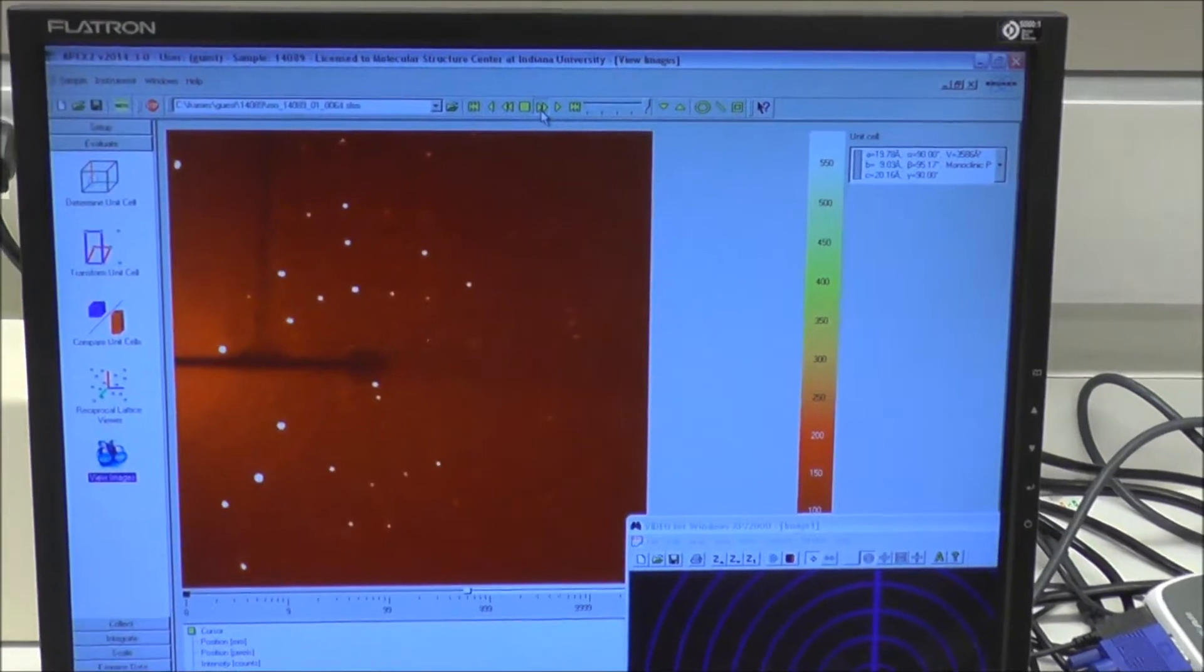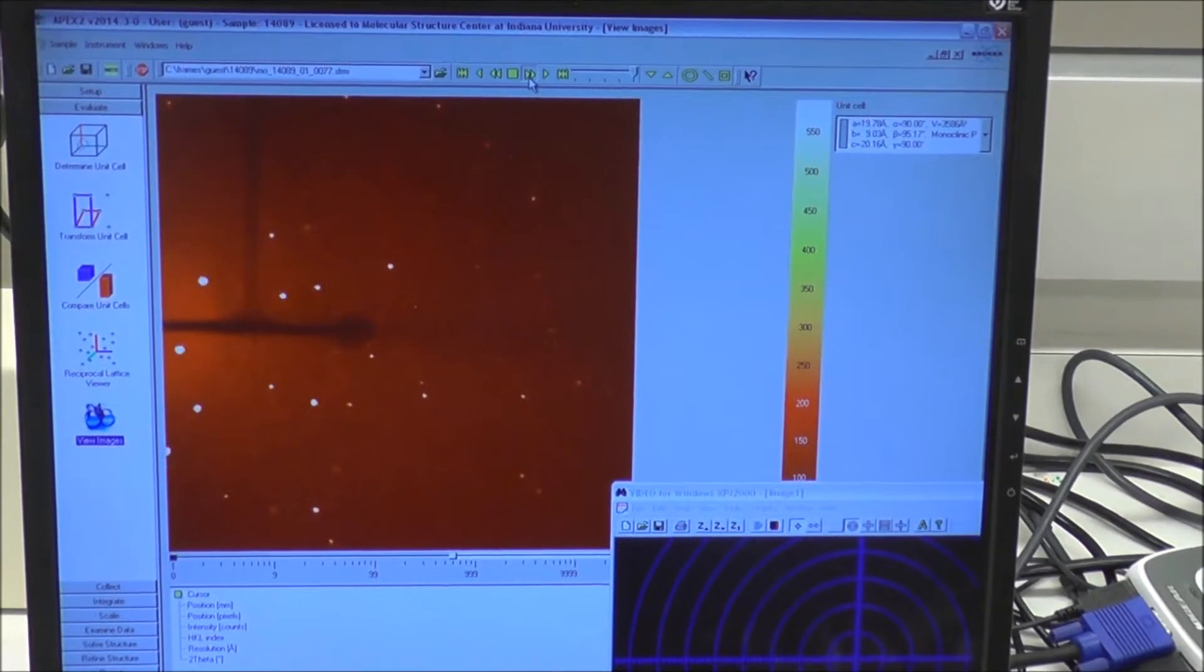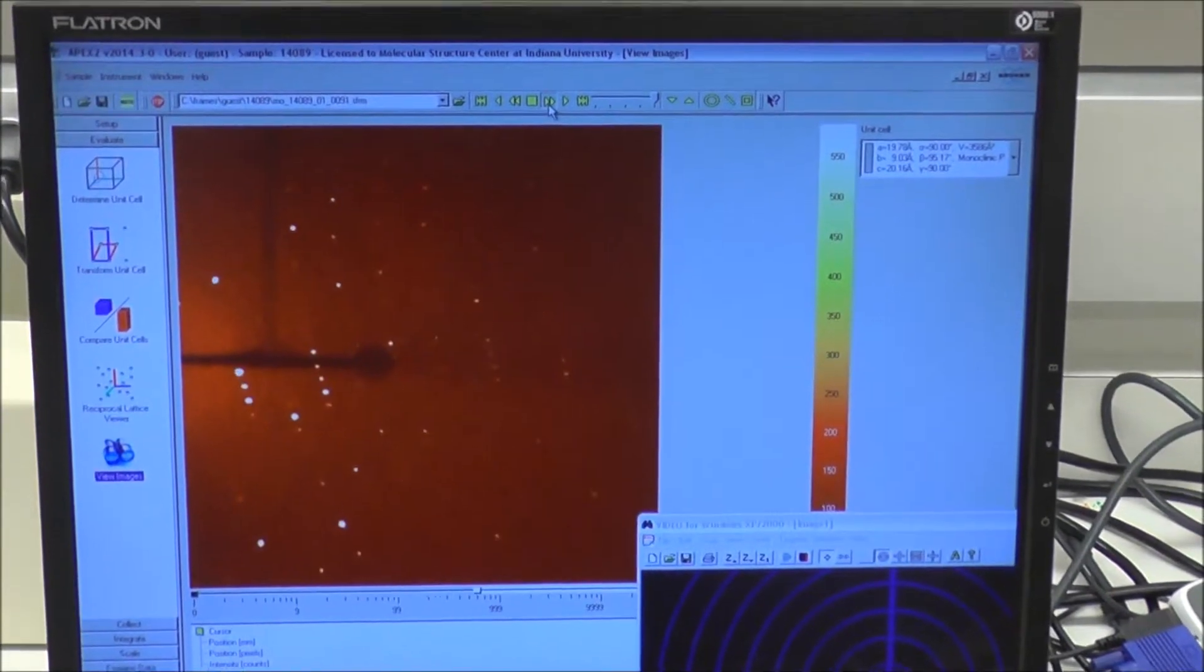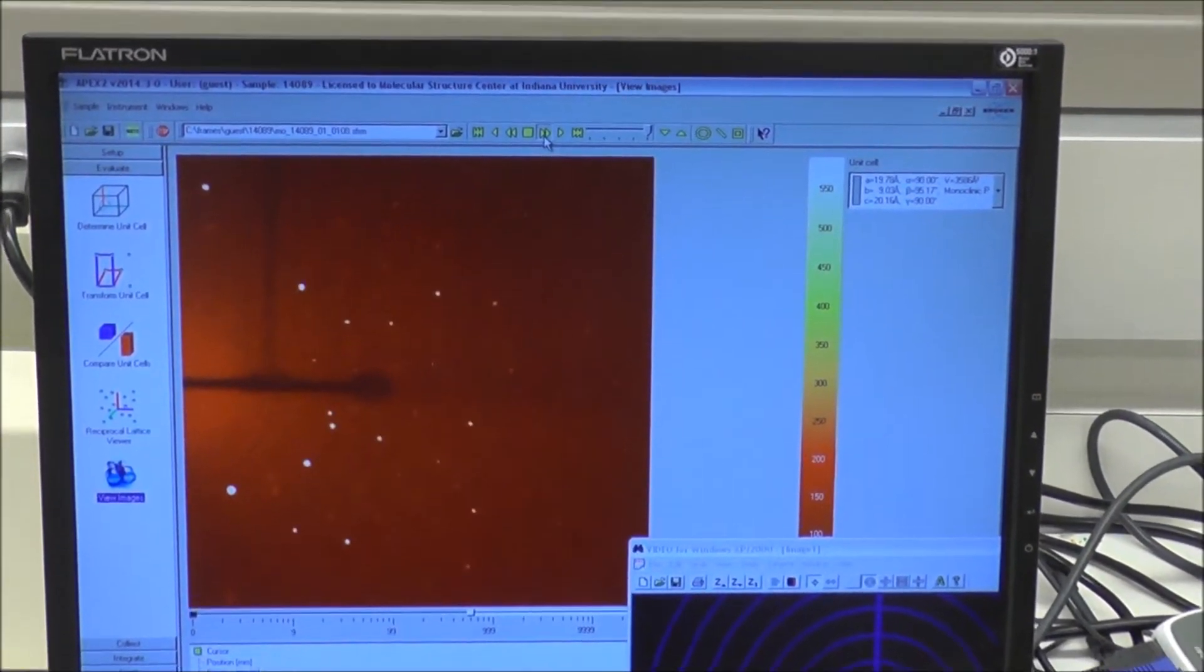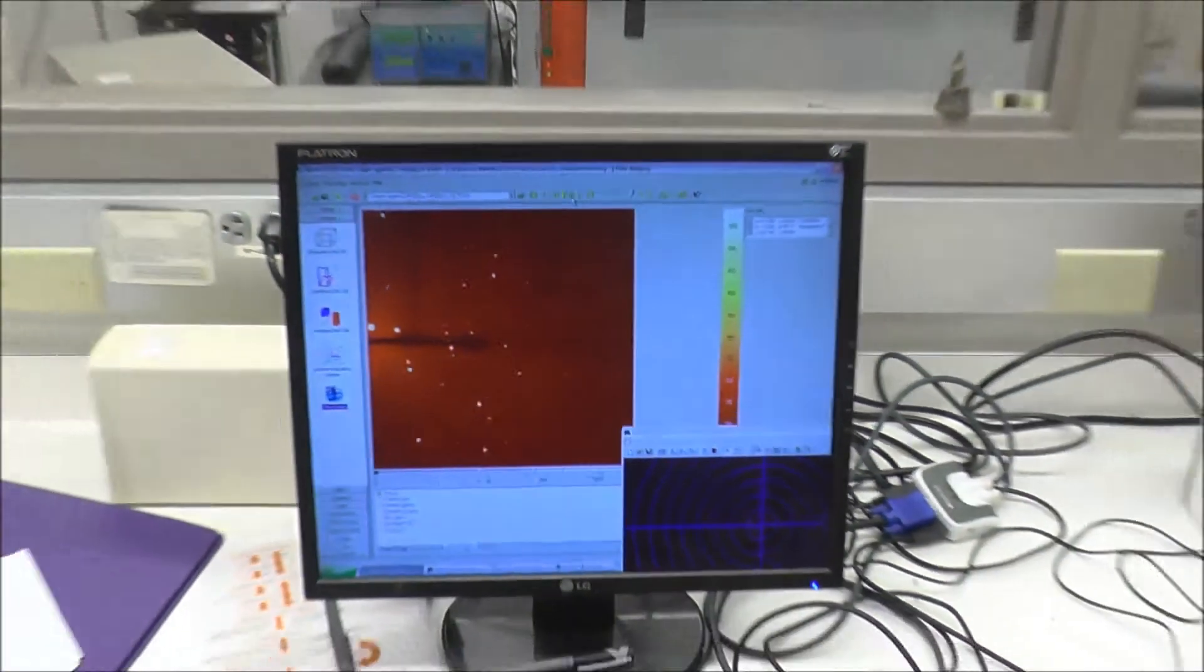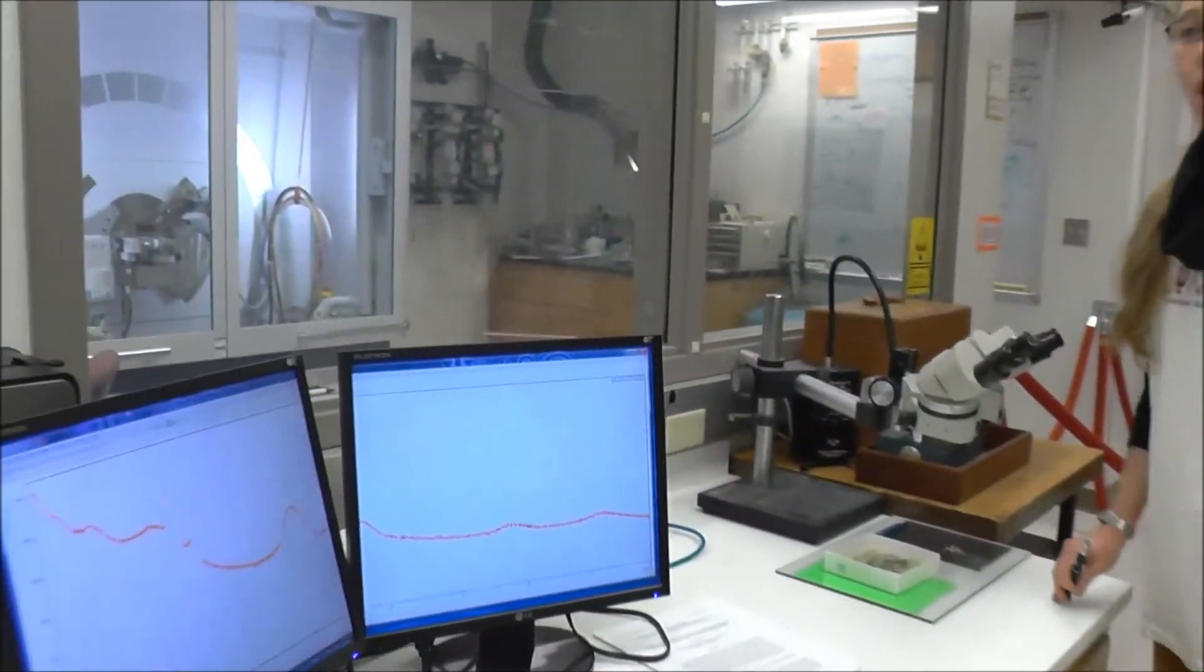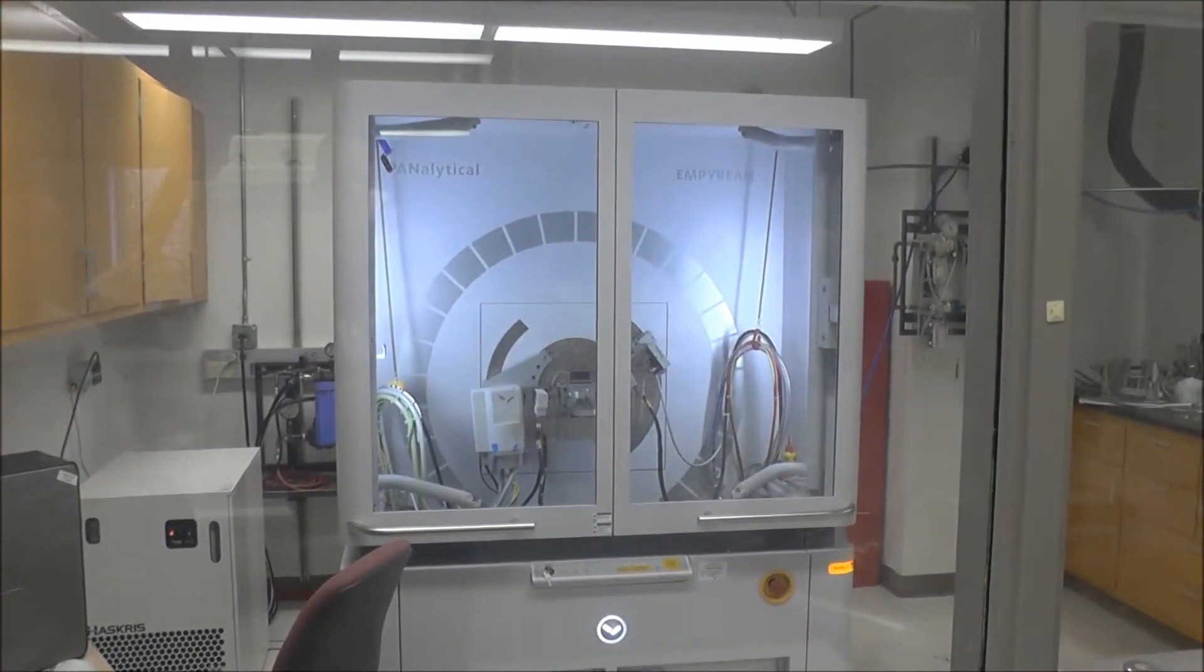The diffraction spots will tell us by their intensity what is there and by their position where it is. If we put the entire data set together, with some mathematical magic which won some Nobel Prizes in the past century, we can figure out what and where without prior knowledge. Often we get substances from chemists or pharmaceutical companies where they propose a structure and we find something completely different. We wouldn't really have to have prior knowledge.